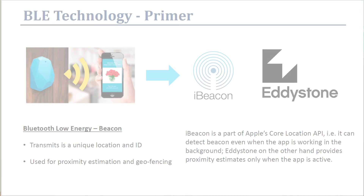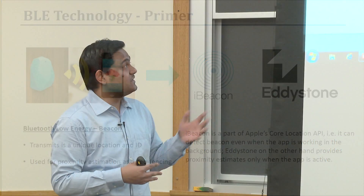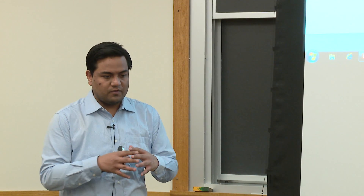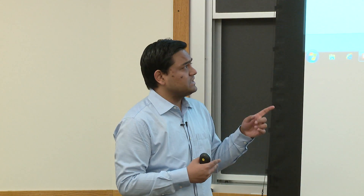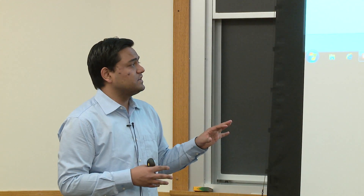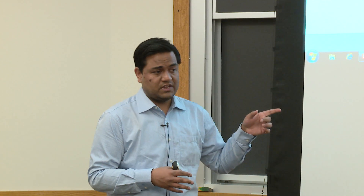BLE has two main cornerstones being used to develop all BLE applications: one is iBeacon and the other is Eddystone. iBeacon is the format given out by Apple, whereas Eddystone is something that Google came out with. Both of them are fundamentally very different. The biggest difference is that iBeacon is part of Apple's Core Location API.